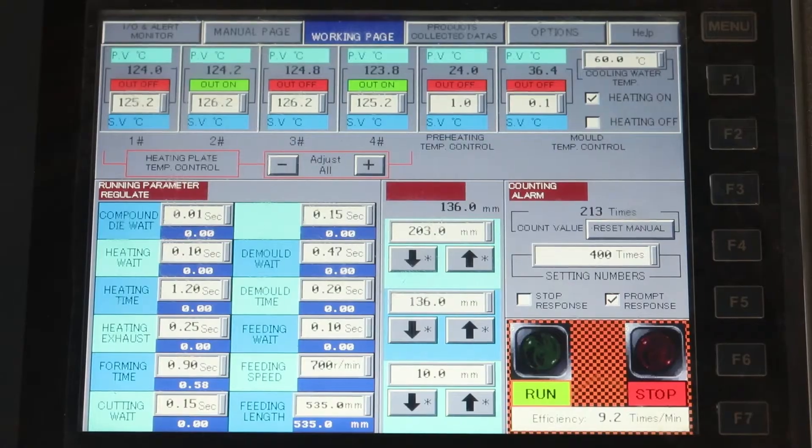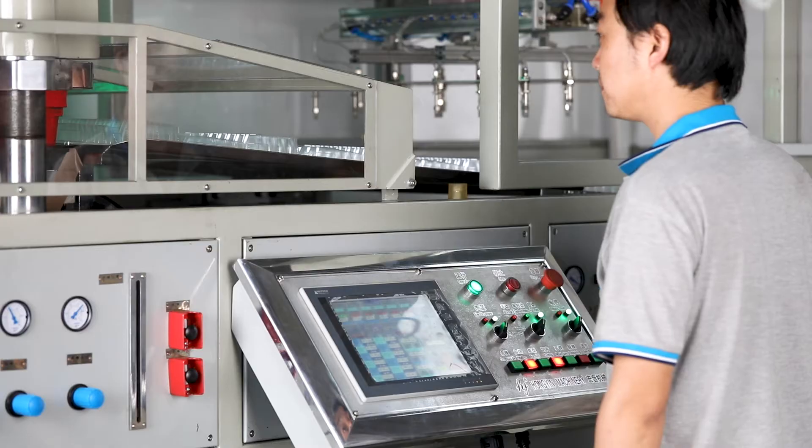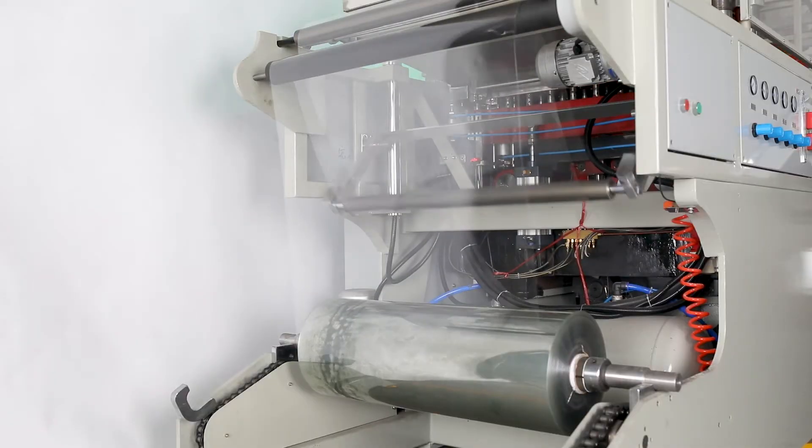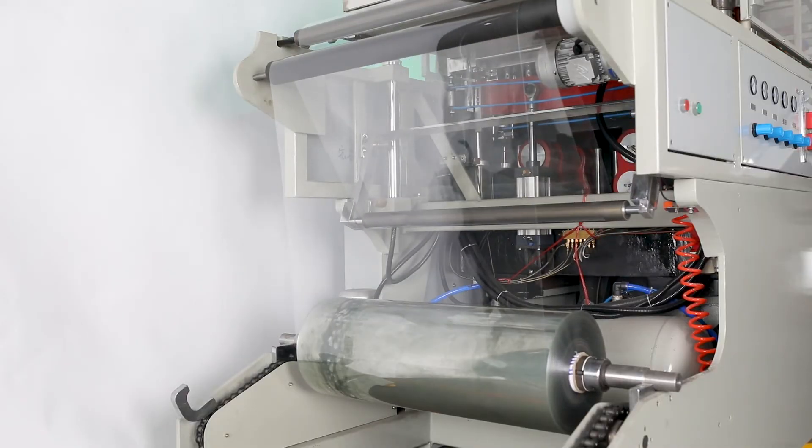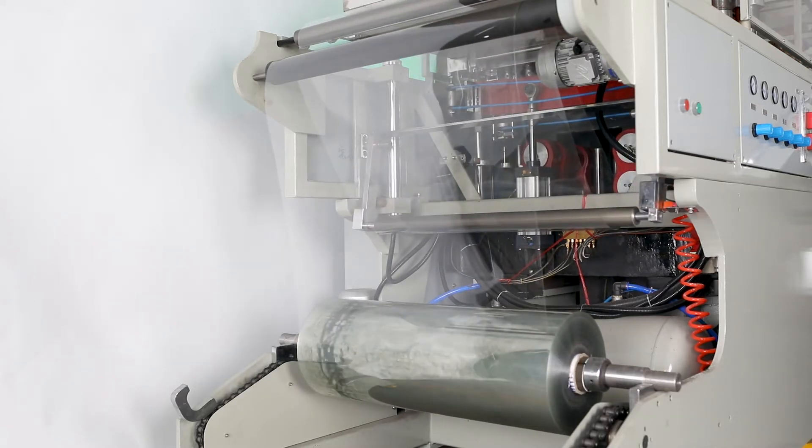The film feeding and stacker are controlled by servo motor. The machine is used for producing BOPs, PVC, PET, and HIPS plastic boxes, trays, lids, etc.